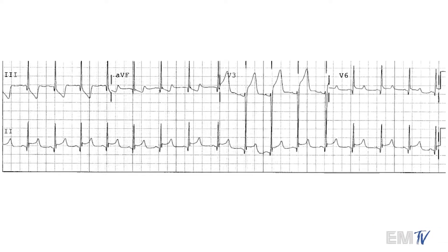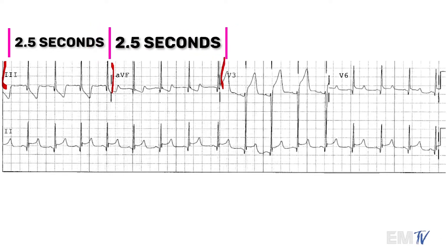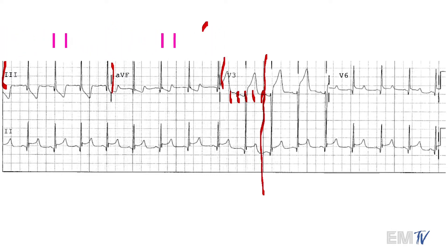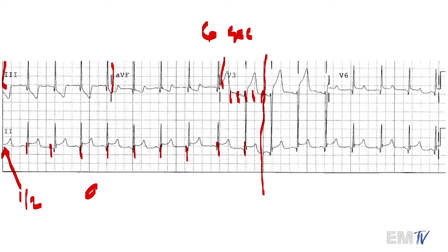The trick is to realize that each one of these lead groupings represents two and a half seconds of time. So what we'll do to quickly create a six-second strip is take two of these lead groupings and then count five additional large blocks — each large block represents 0.2 seconds — to make our six-second strip. We'll then count our QRS complexes and determine a rate. I'm going to count this as nine and a half, so we'll say it's 95 BPM.